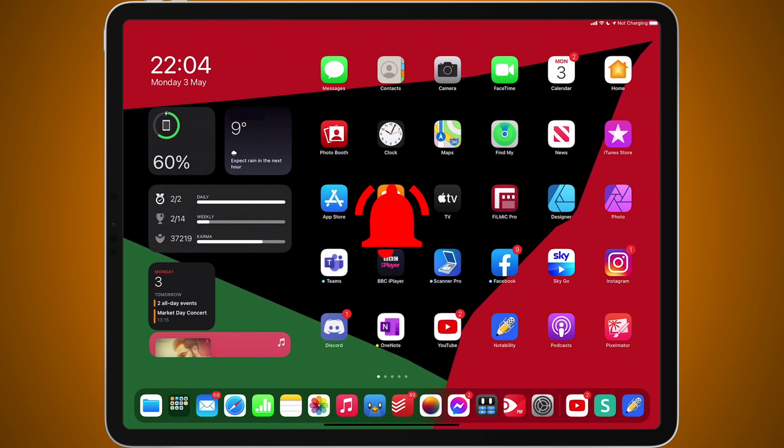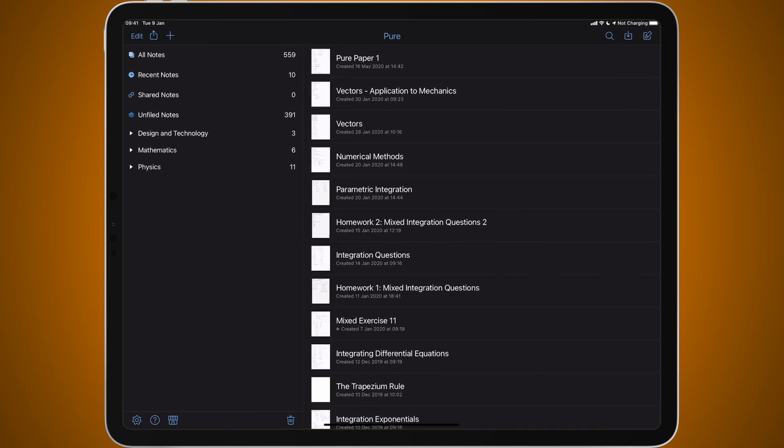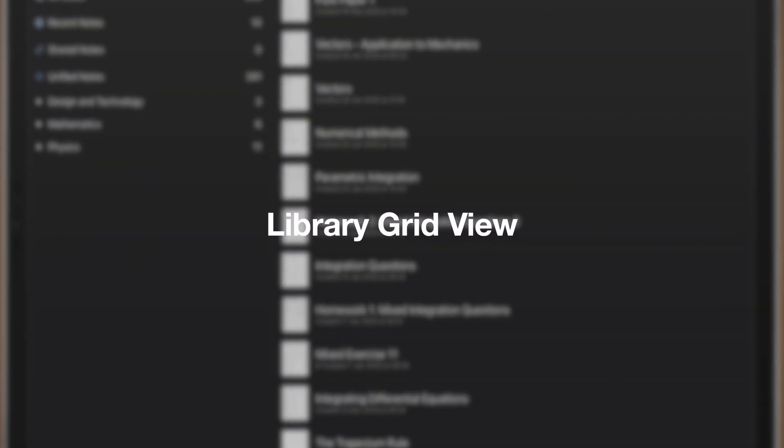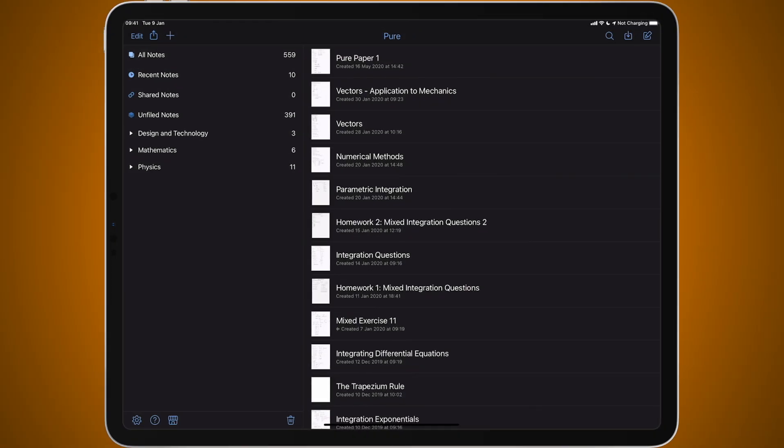So let's launch into Notability and the first major feature is the new library grid view. This allows you to change the way that you view your library of notes.